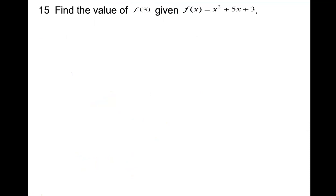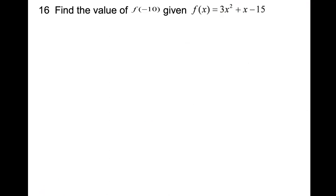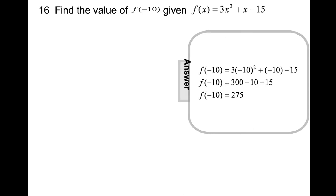Now find the value of f of 3 given f of x equals x squared plus 5x plus 3. Go ahead and pause the video and solve on your own. Substituting x equal to 3: 3 squared plus 5 times 3 plus 3 gives the answer 27. Another question: find f of negative 10 given f of x equals 3x squared plus x minus 15 — replace x with negative 10 and use your calculator.